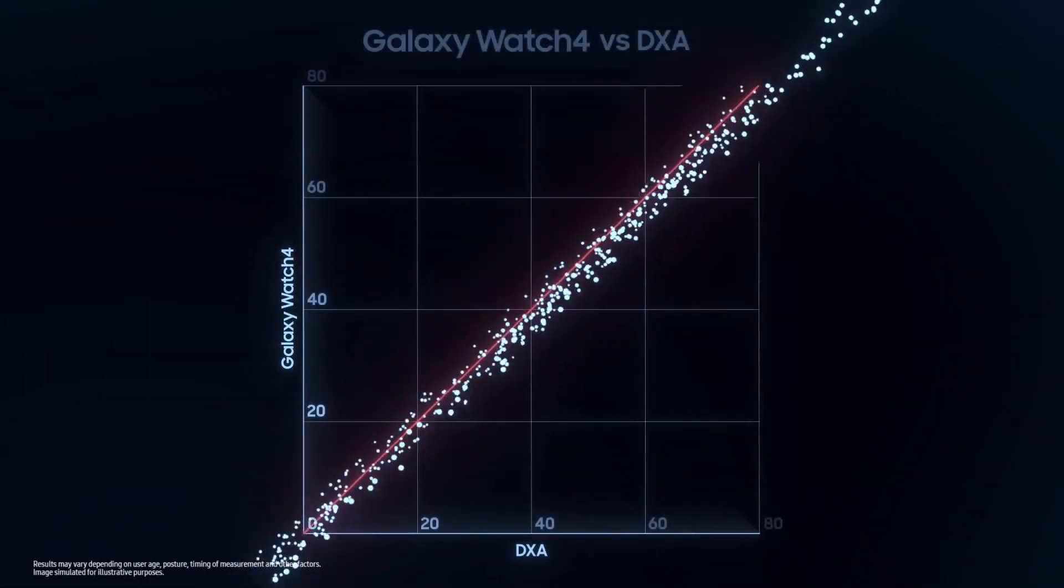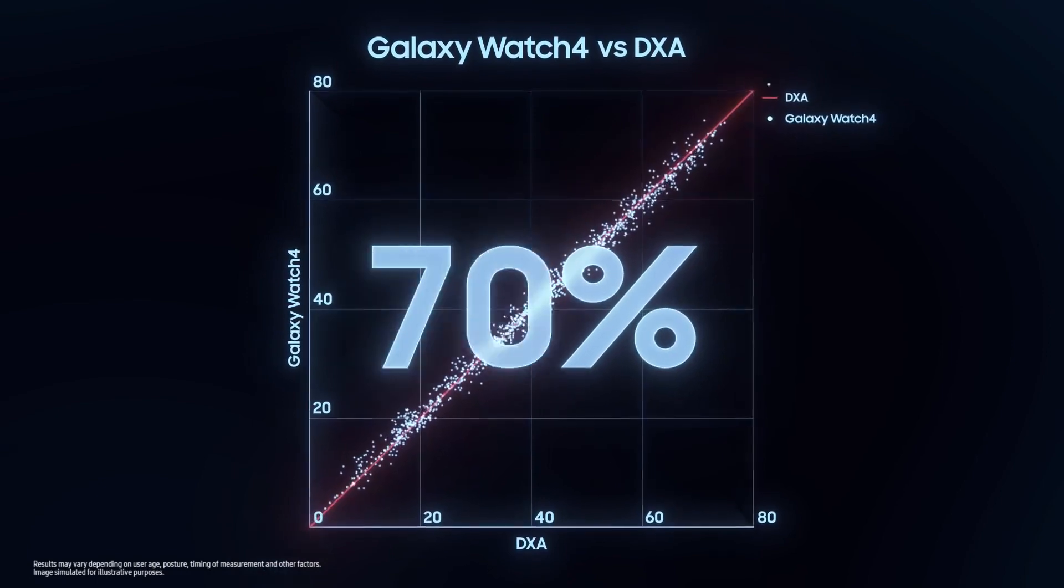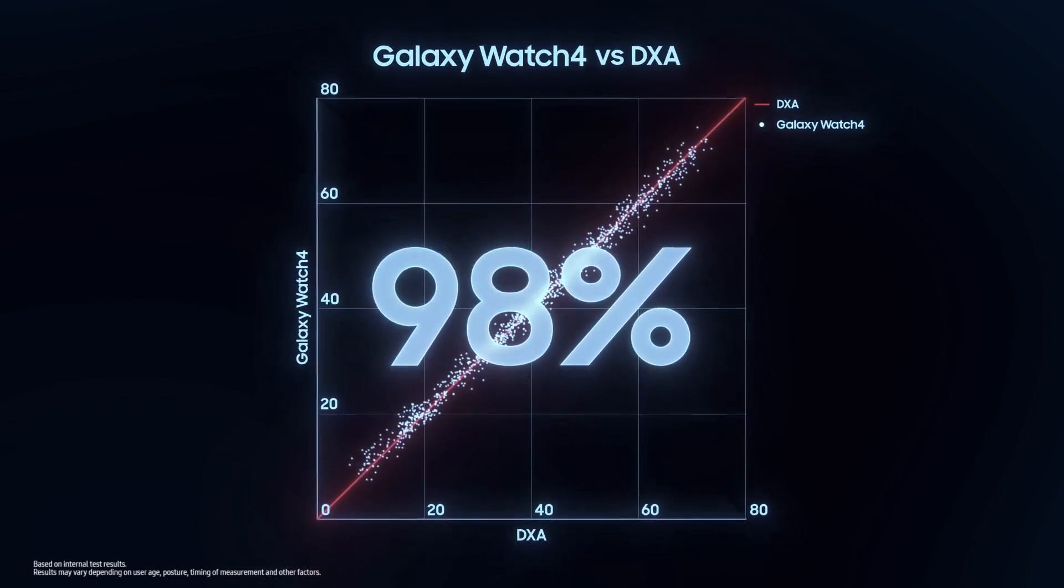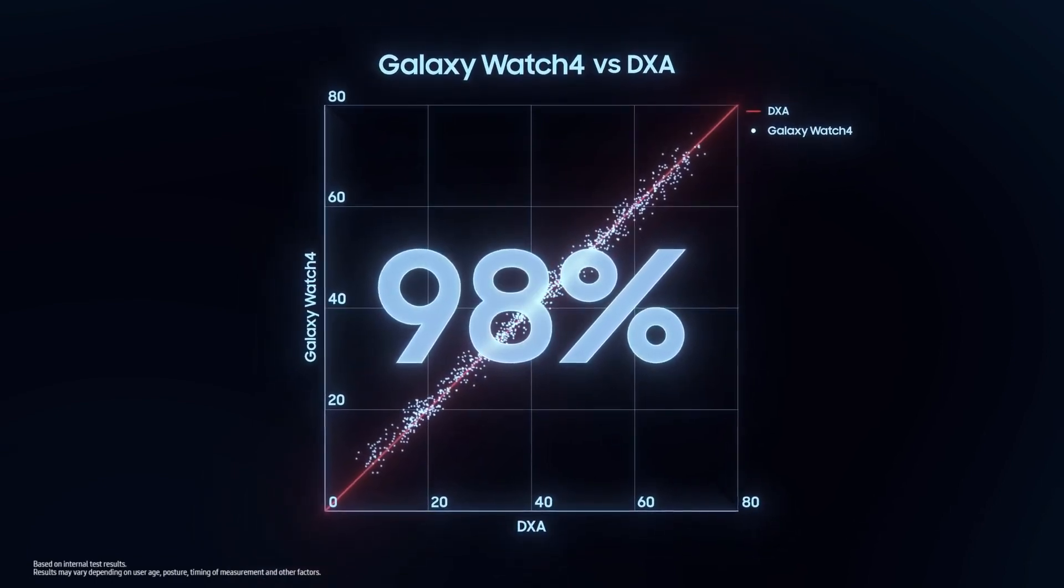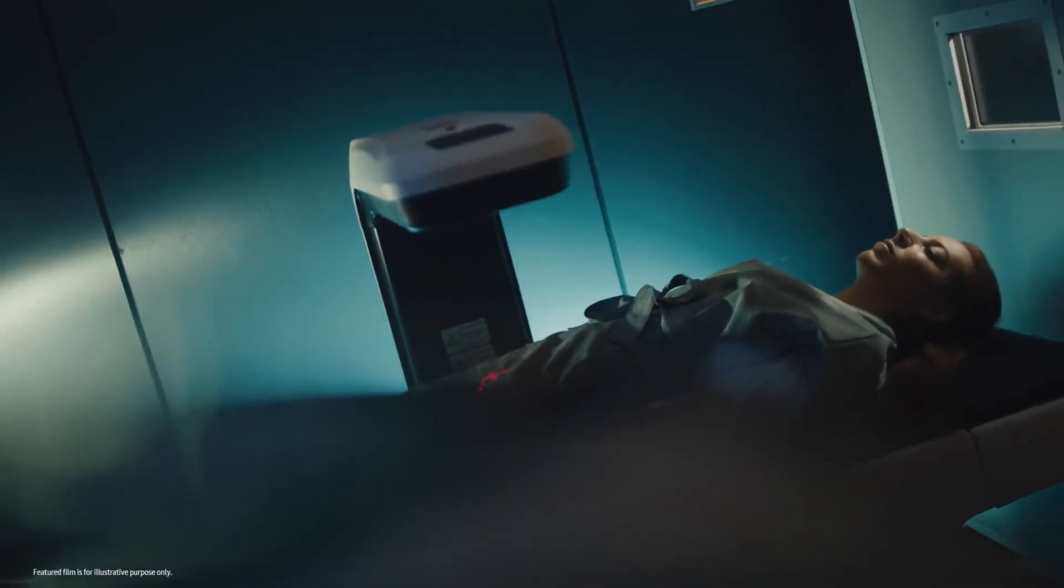The results are undeniable. With a correlation of 98%, Galaxy Watch BIA measurements are as accurate as those from DEXA scans, the gold standard of body composition measurements trusted by industry experts.